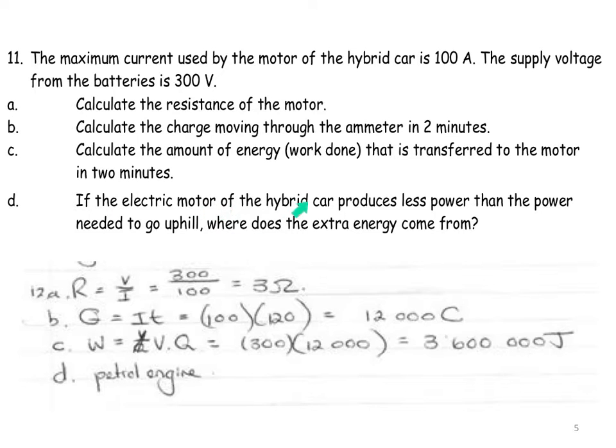If an electric motor of a hybrid car produces less power than the power needed to go uphill, where does the extra energy come from? Hybrid means a crossbreed. Okay, if you've got a hybrid flower, it's two flowers together. A hybrid car has both an electric engine as well as it backs up with petrol. So if the car doesn't have enough power for any reason, it will go over to petrol. So it's kind of like the best of both worlds. So it will use petrol.